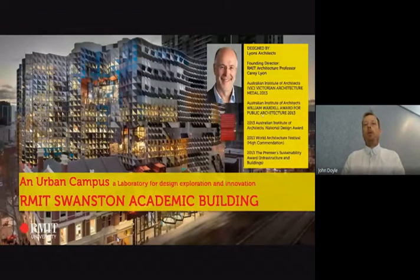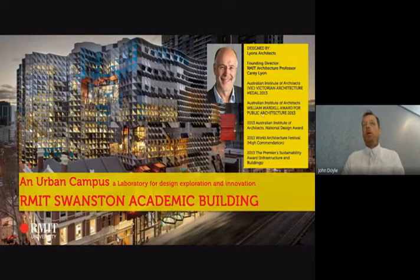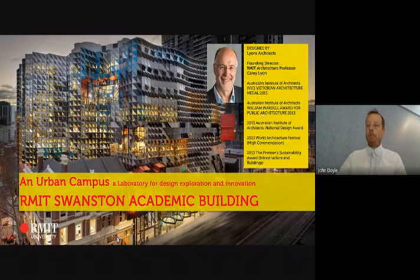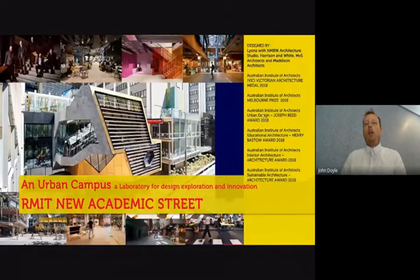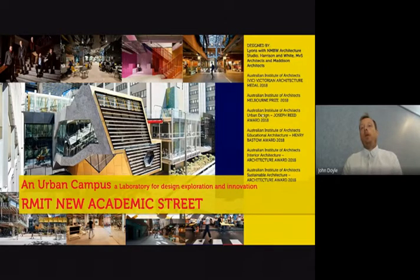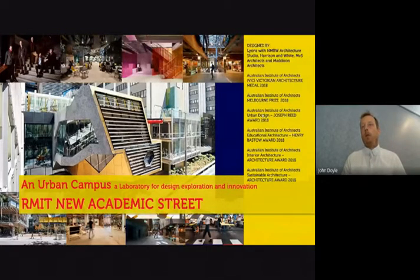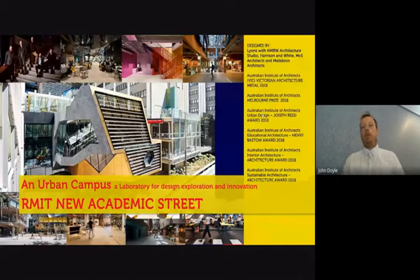Another building you would be studying in is the Swanston Academic Building, the SAB, designed by one of our professors, Harry Lyon, where we run cultural events, lectures, symposia, and other informal events. The library and other informal spaces occupy what's called the New Academic Street — an enormous, sprawling vertical campus of recently upgraded buildings with an amazing array of social spaces, library spaces, informal working spaces, cafes, and restaurants — all part of our city campus on Swanston Street in the centre of Melbourne.